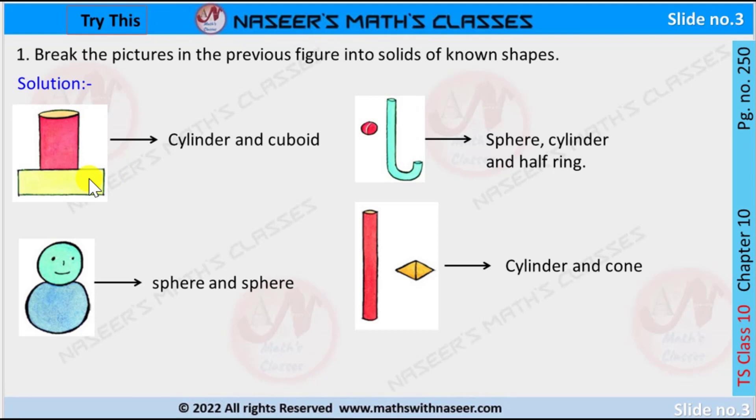First figure is divided into two shapes: first one is cylinder, second one is cuboid. In this figure, the ball is in the shape of sphere and the stick is in the shape of cylinder and ring. Next, third figure is divided into two spheres.